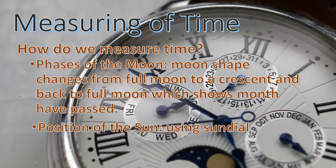We also have the position of the sun measured using the sundial. The downside about this is you can only use it during daylight.